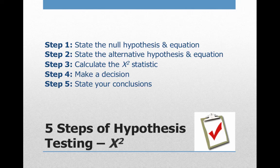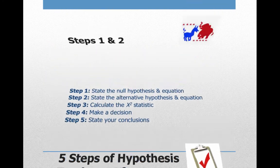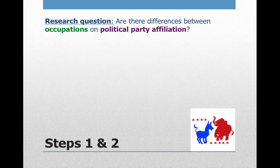Let's cover the five steps of hypothesis testing for Chi-Square Tests for Independence. We'll use the exact same example from part one: are there differences between occupations on political party affiliation?